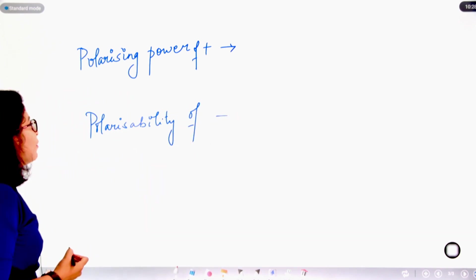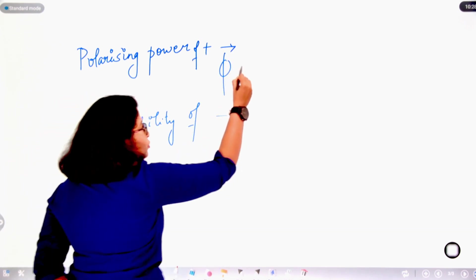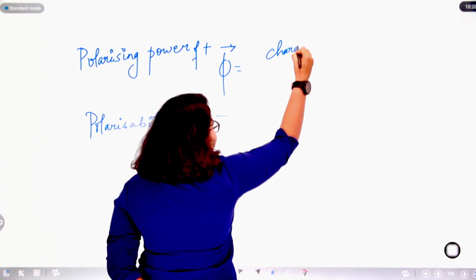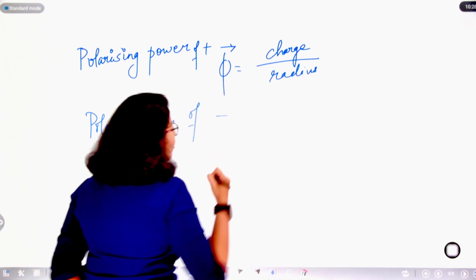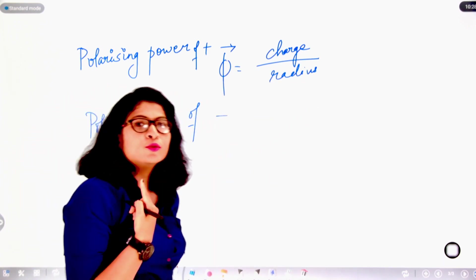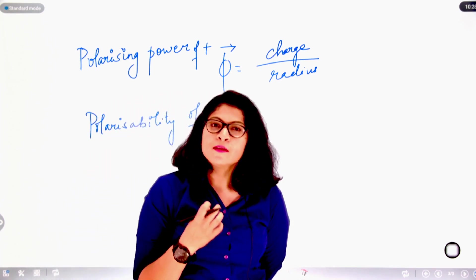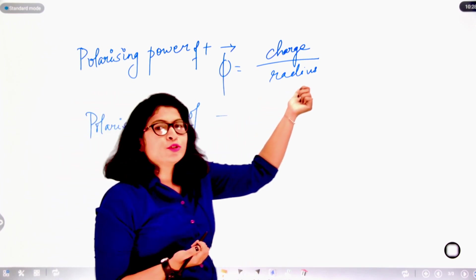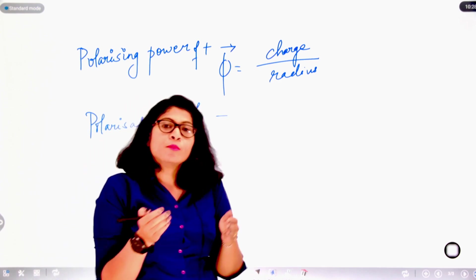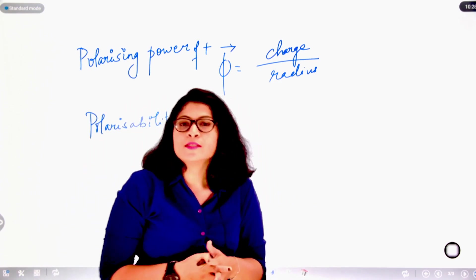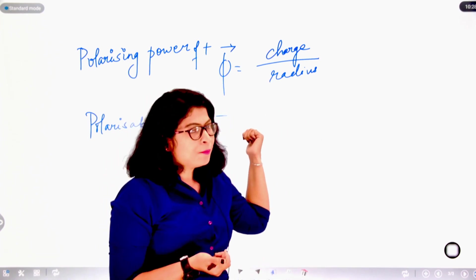If we represent polarizing power of the cation by phi, then phi equals the ratio between charge and radius. Polarizing power is directly proportional to charge — as the charge on a cation increases, its size decreases — and inversely proportional to its radius. If the radius becomes smaller, the distance from the nucleus gets reduced, increasing the hold of the nucleus on the outermost electron, thereby increasing polarizing power.